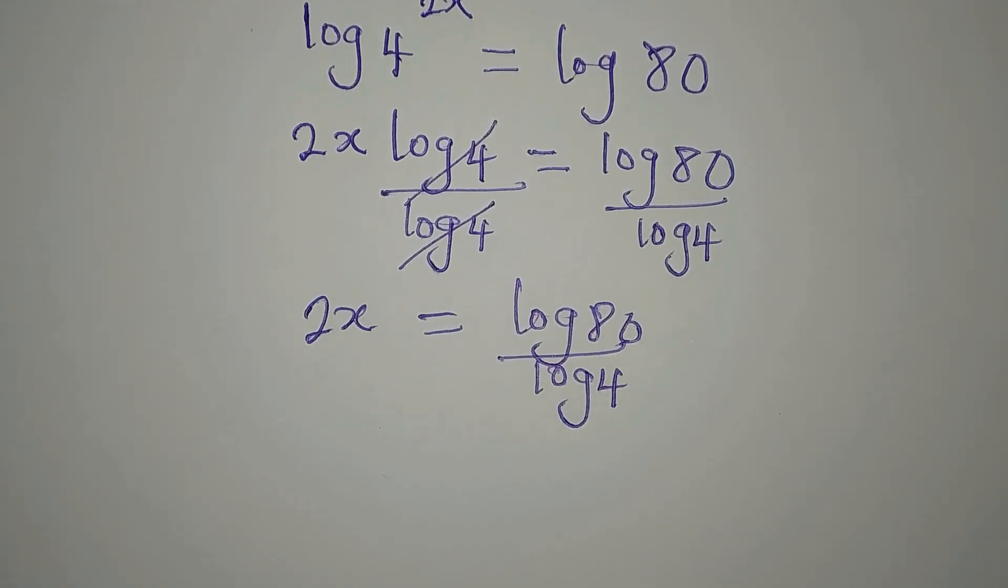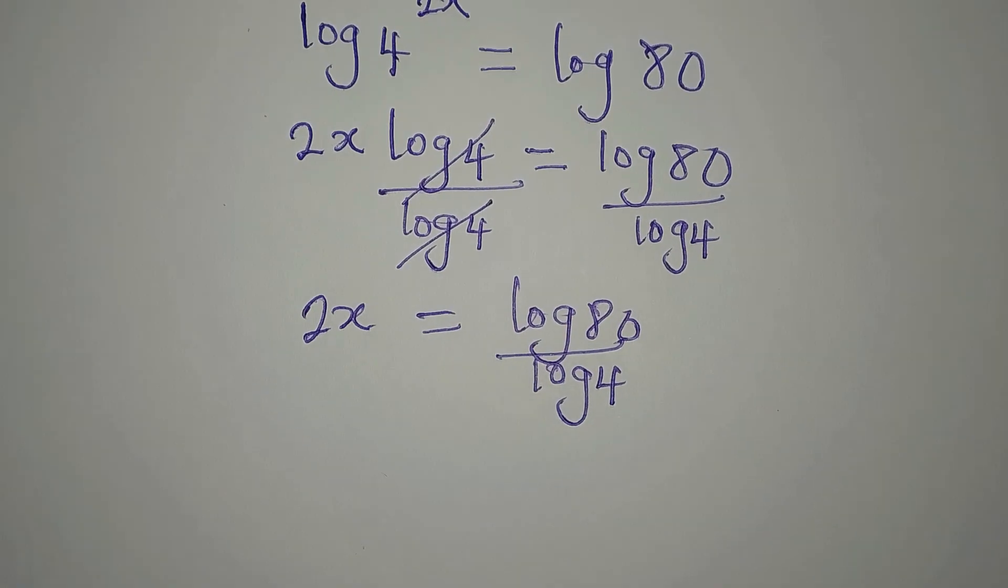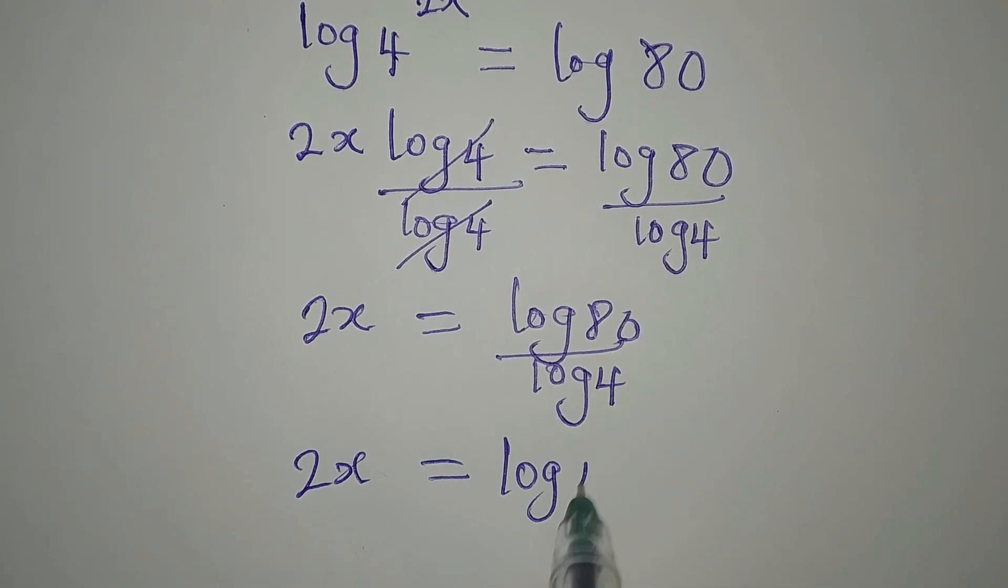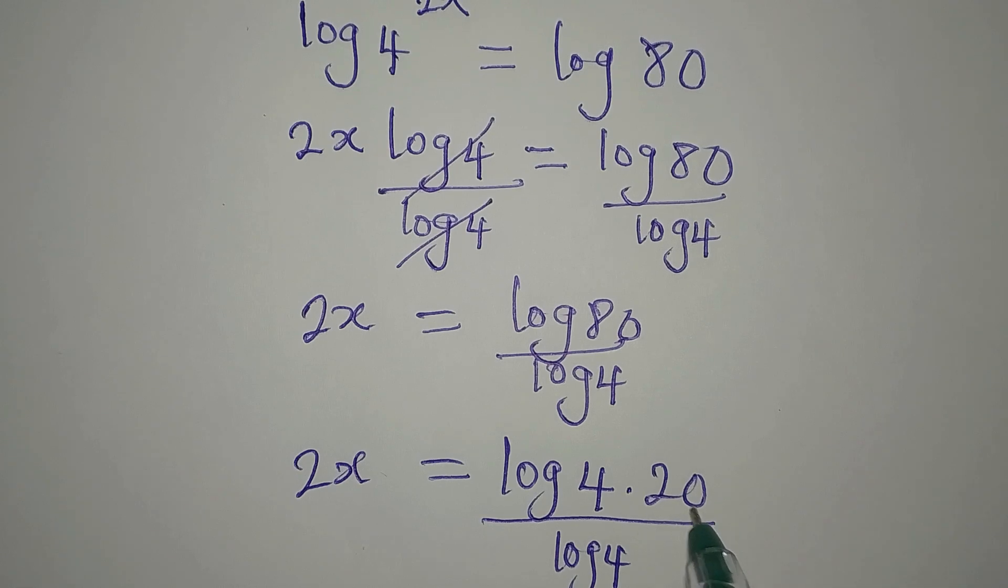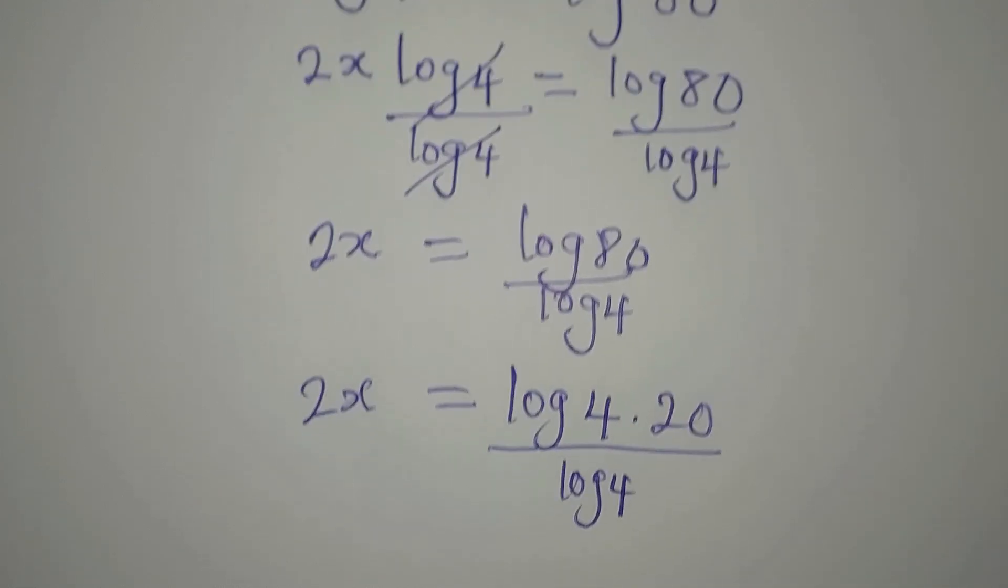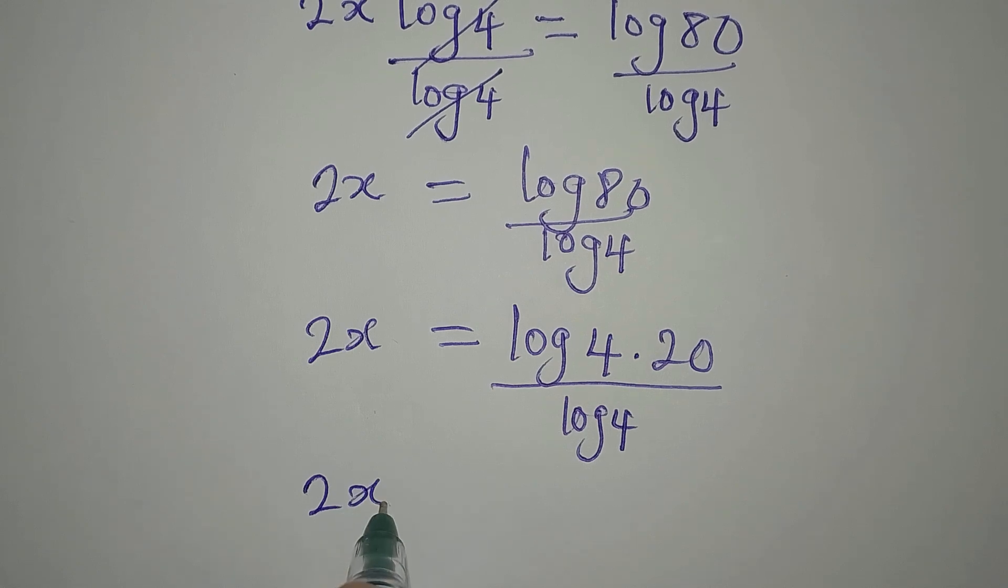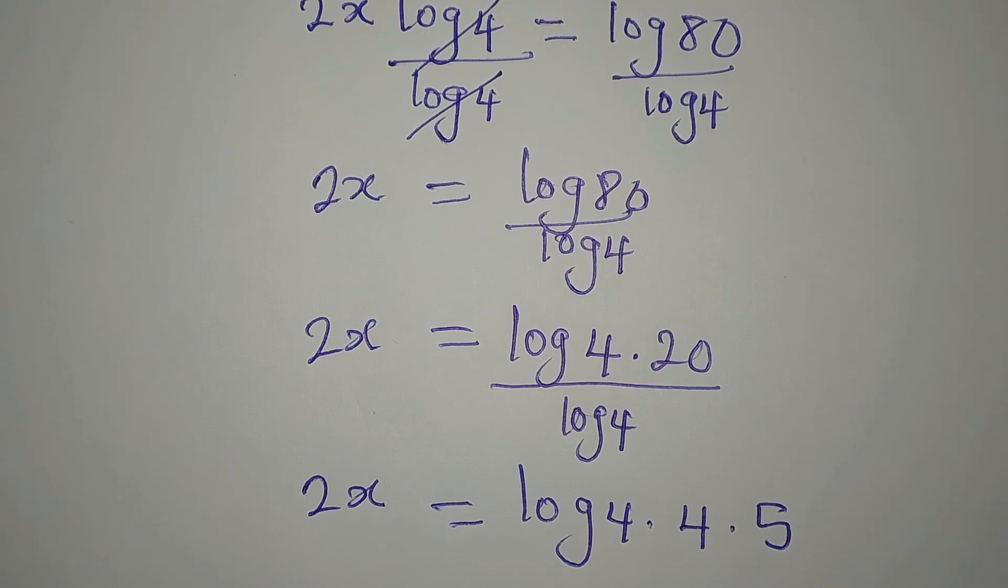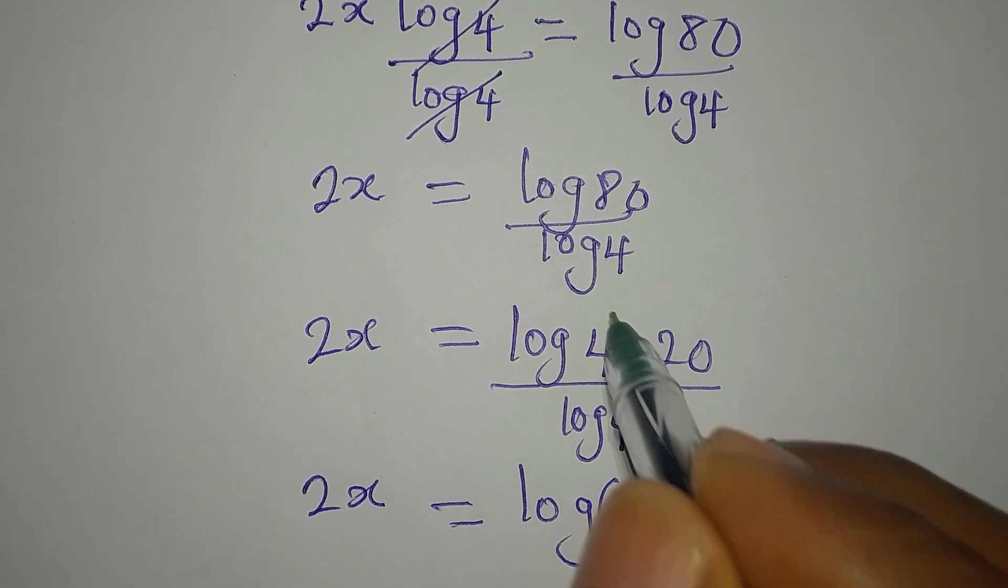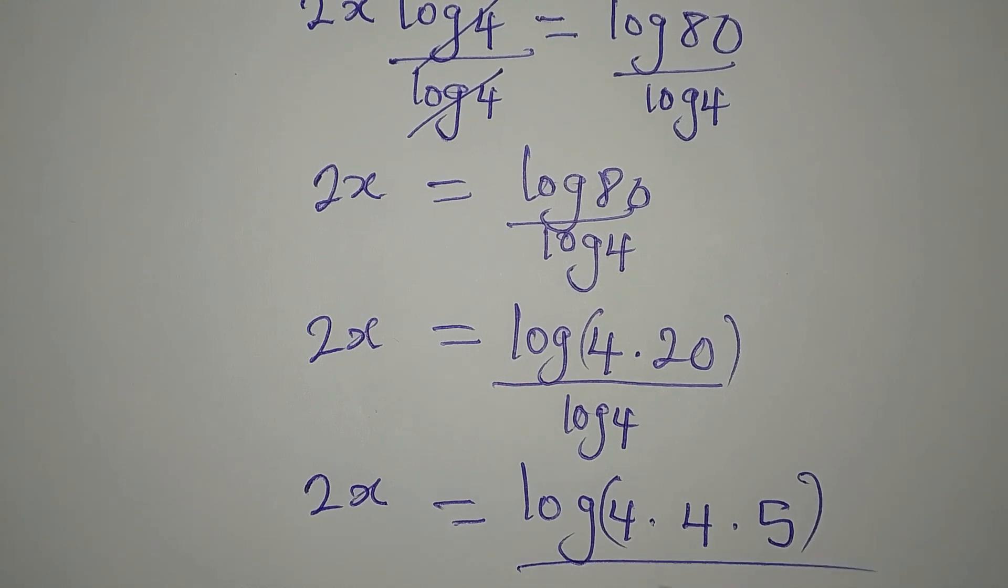But then we can decide to simplify what we have on the right. So I'll write 2x, then this is log 4 times 20, then over log 4. Now look at 20, 4 can also be found in 20. So that means we can write this as 2x equals log of 4 times 5, so 4 times 4 times 5 will give us 80. So let's put it in brackets, then everything is over log 4.